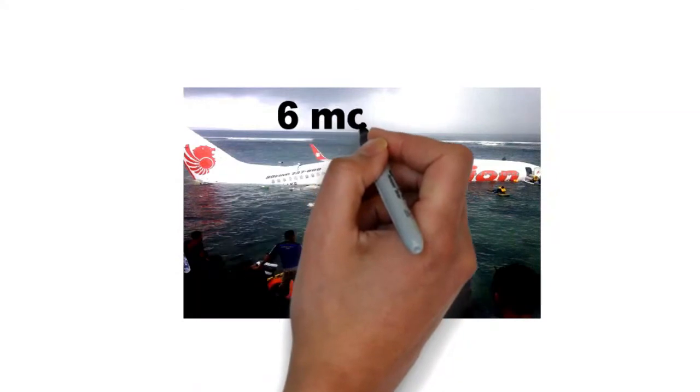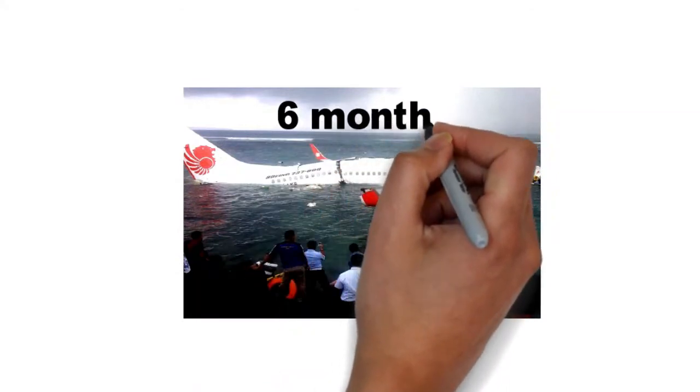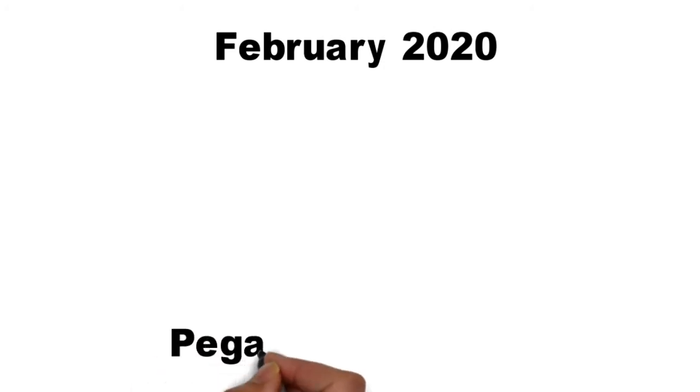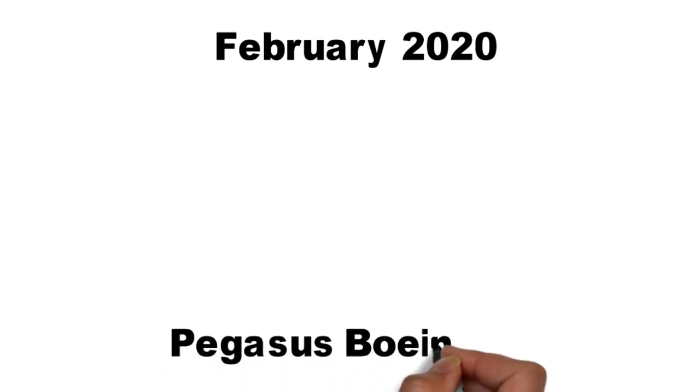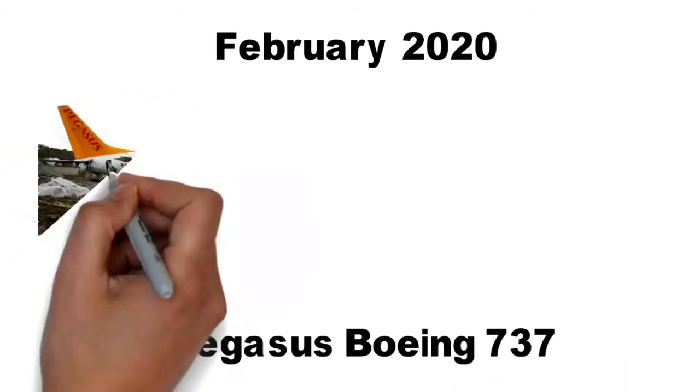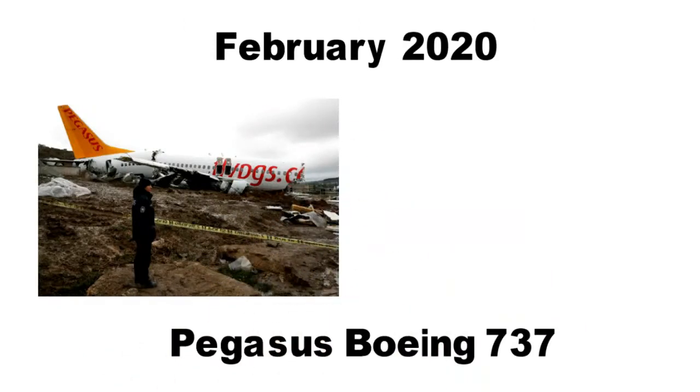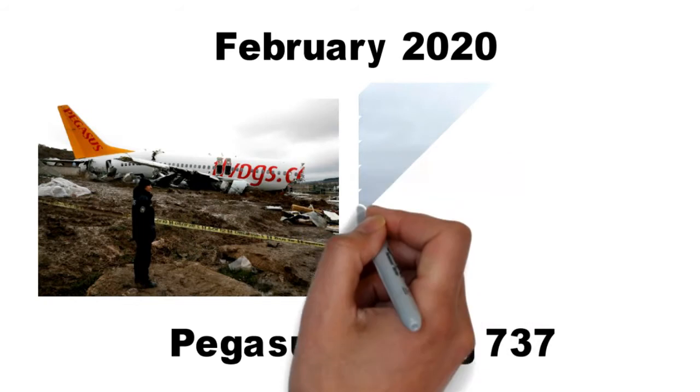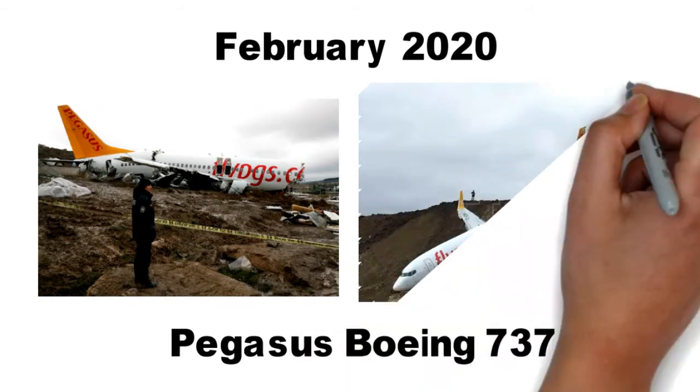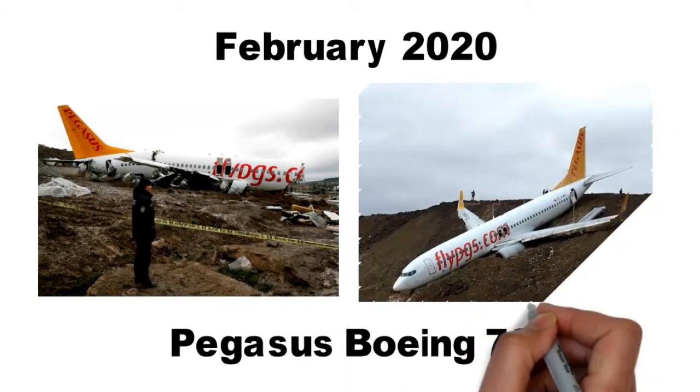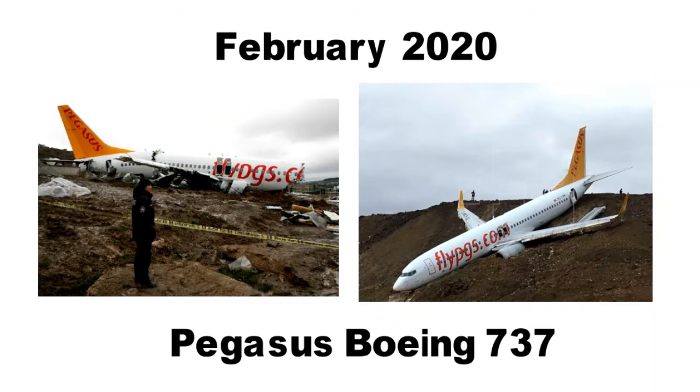A second crash in a period less than six months of the same exact model. In February 2020, a Turkish airline, Pegasus Boeing 737, collided with a wall after landing at Istanbul Airport and was completely broken. During the month leading up to the event, another airplane of the same model and the same airline company slipped on the same runway at the exact same airport. Again, the same catastrophic event in almost a month.